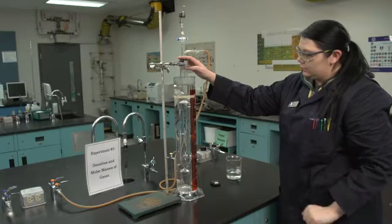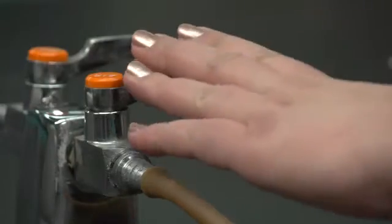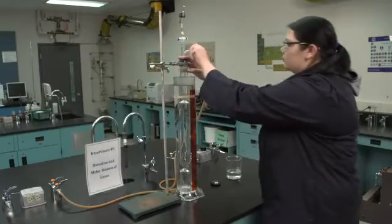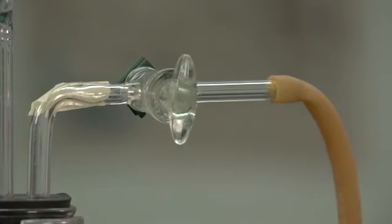Continue to bubble the gas through the apparatus for one minute. Switch off the gas and immediately close the stopcock associated with the inlet gas. You can take your hand off the stopper at this point.